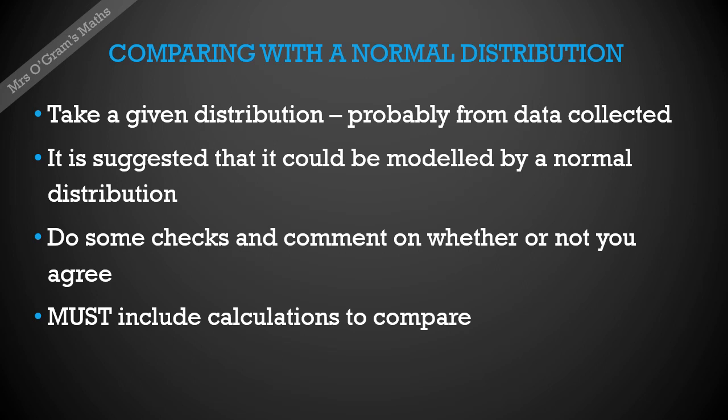The steps you should go through: take the distribution that you've been given, probably from data collected. It will give you some suggestion of how they want it to be modeled by a normal distribution. Then you do some checks and comment on whether or not you agree. You must include some calculations to compare them. You're going to look for the key features and look at the tail ends or perhaps the middle section and compare the probabilities.